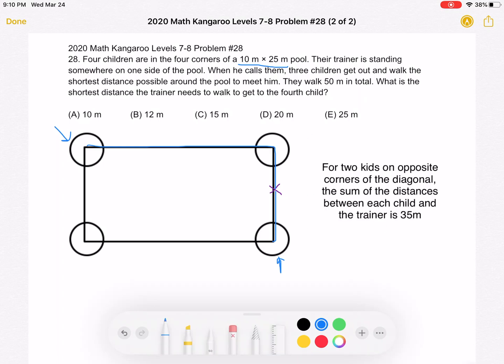That's what we have right here for two kids on opposite corners of the diagonal. The sum of the distances between each child and the trainer is 35 meters.